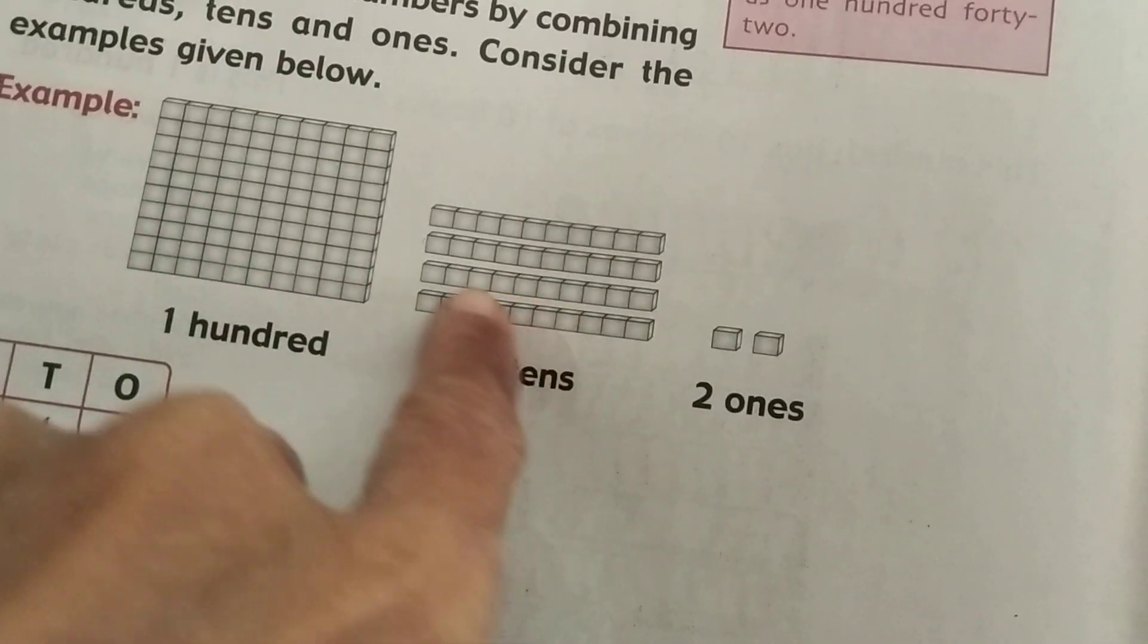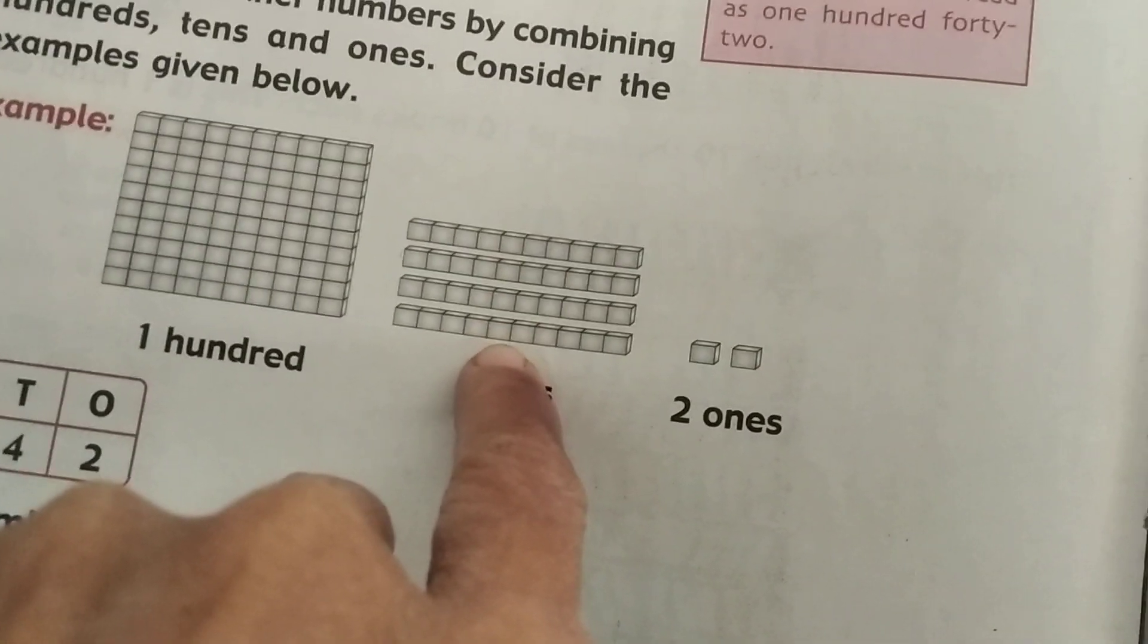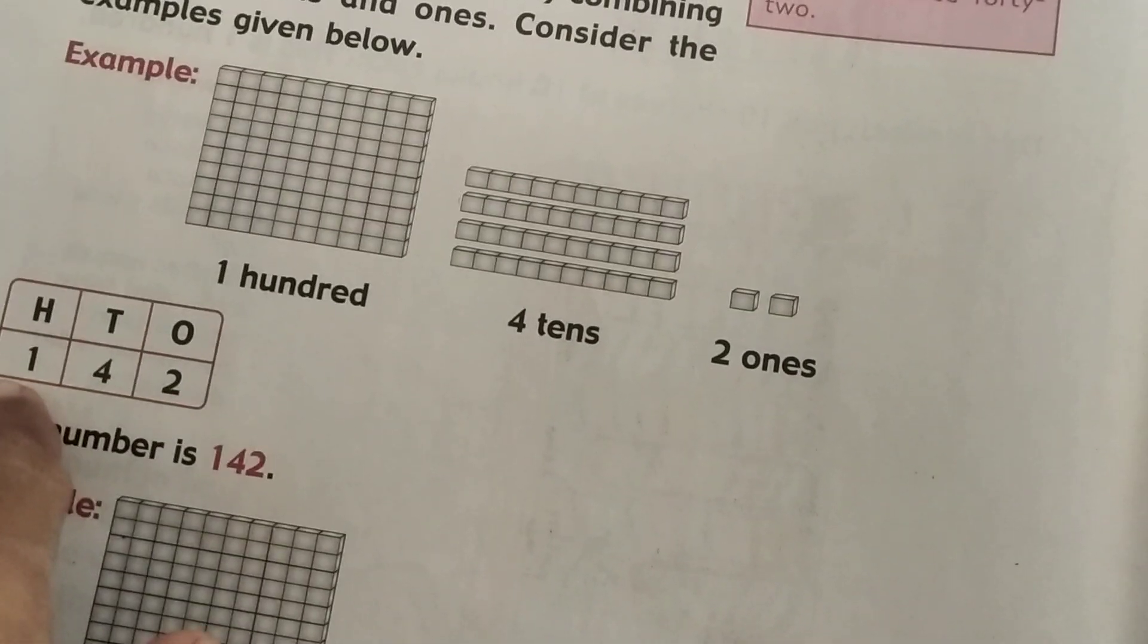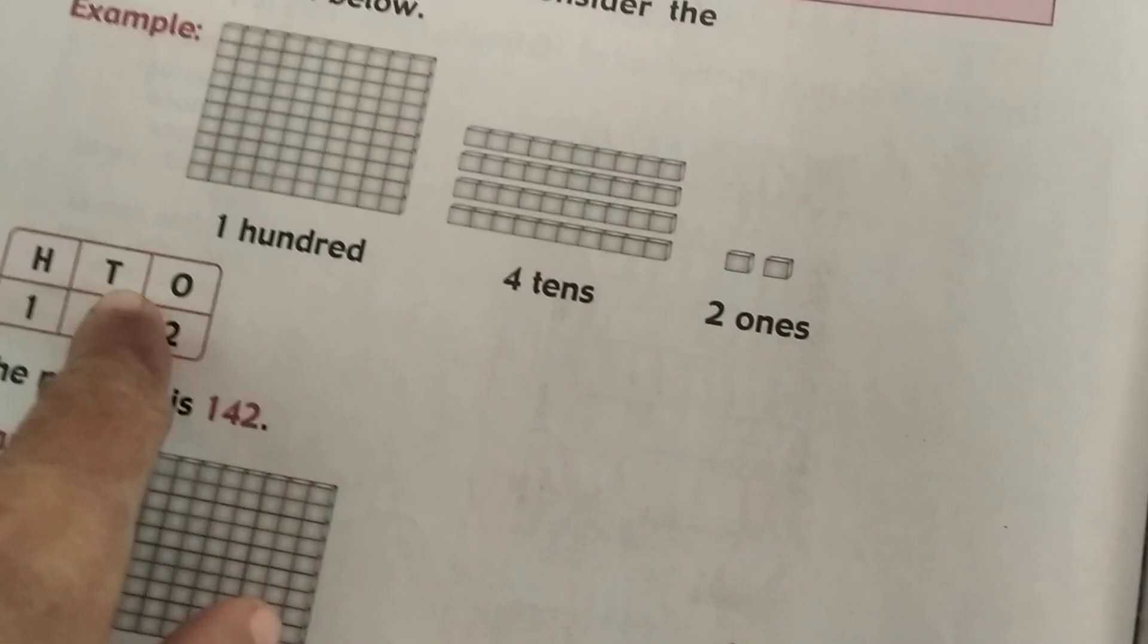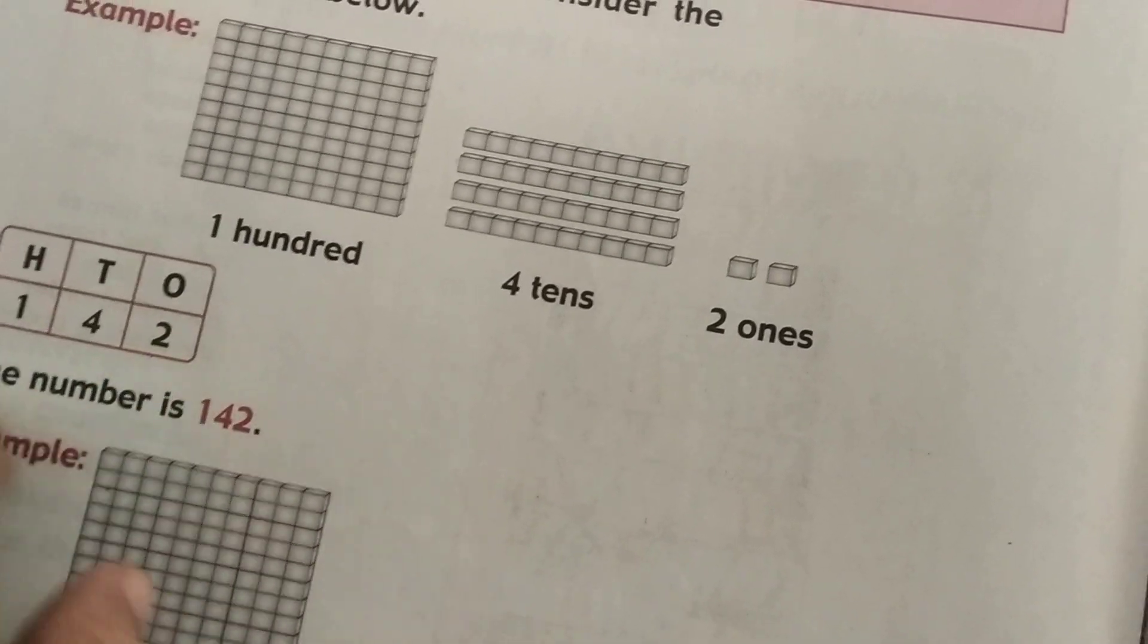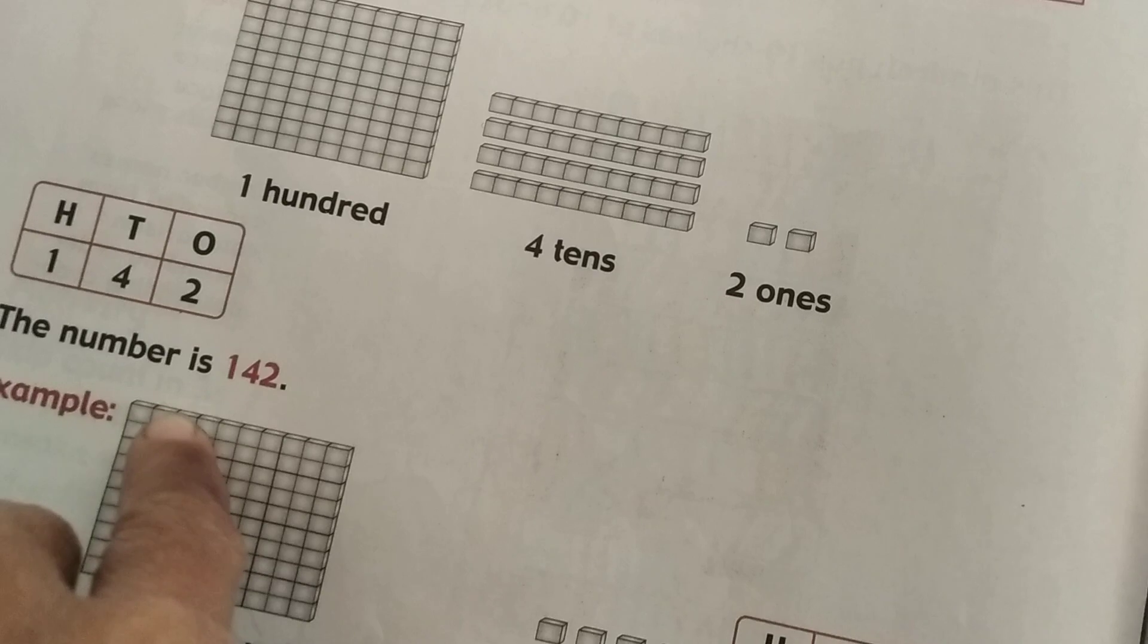So this is 1 hundred and 4 tens—1, 2, 3, 4—and 2 ones—1, 2. Okay, 1 hundred, 4 tens, 2 ones. So the number is 142.